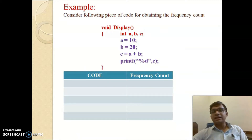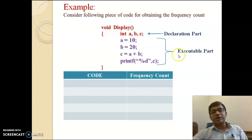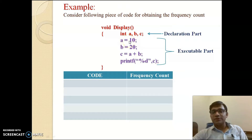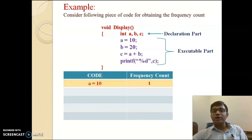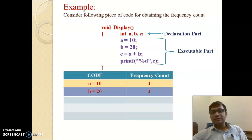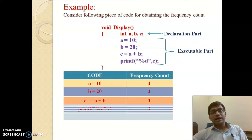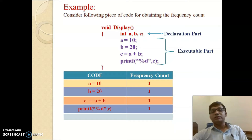The declaration 'integer a, b, c' is a declaration of variables, which is the declaration part. The four operations that follow are the executable part, and we consider the executable part when finding frequency count. Since there is no loop, a = 10 executes only once, b = 20 executes only once, c = a + b executes only once, and displaying the value on the output screen also executes only once.